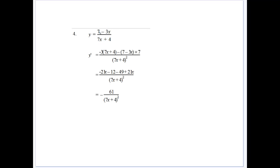So we derive our top. We get the minus 3. Then multiply by the function in the denominator minus the numerator times the derivative of the denominator. And that's all over the denominator squared.